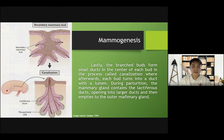Lastly, the branch buds form small ducts in the center of each bud in a process called canalization, where afterwards each bud turns into a duct with a lumen. During parturition, the mammary gland contains the lactiferous ducts opening to a larger duct, which then empties into the outer mammary gland.